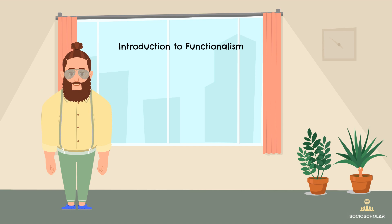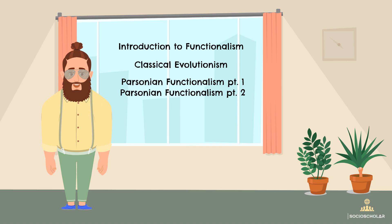Then we will see what is meant by classical evolutionism. In the next two lessons after that, I will dig deeper and talk about Parsonian functionalism, and finally I will wrap up this series with Luhmann's systems theory. So let's get started.